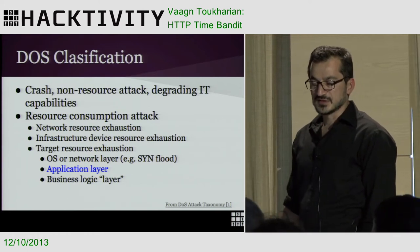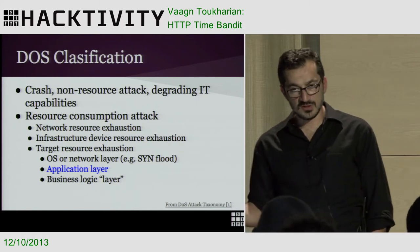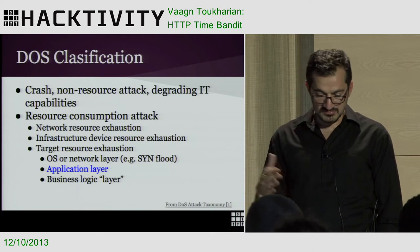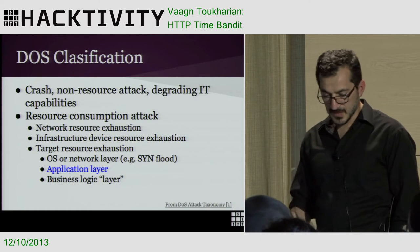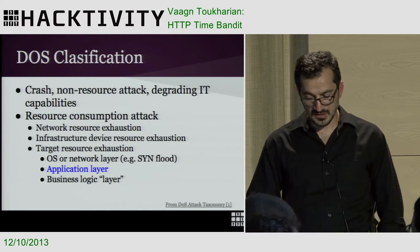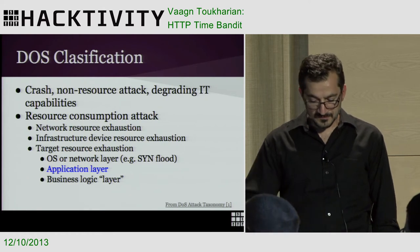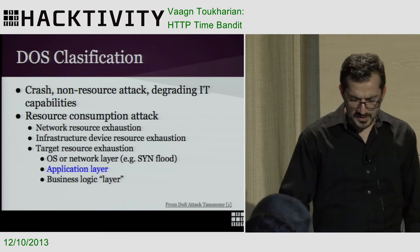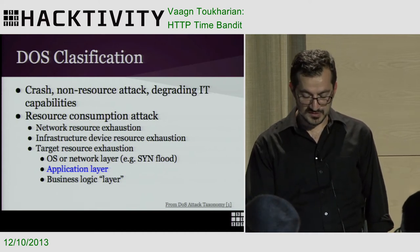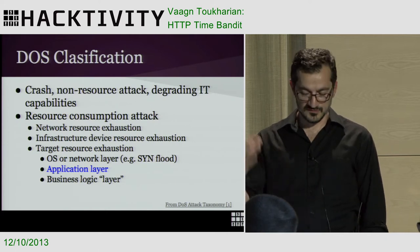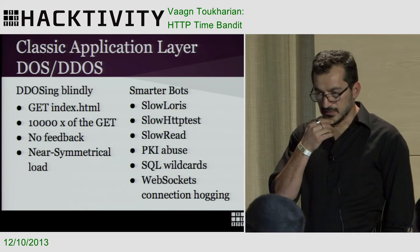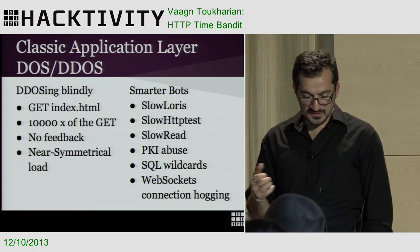A little bit of taxonomy on denial of service. There are two major types: one type strives to crash the system — you hit the IT infrastructure on a more or less system level — and then there are resource consumption attacks on a network layer. We're going to talk mostly about application layer denial of service attacks, layer seven, and the business logic layer, which is above the OSI model.